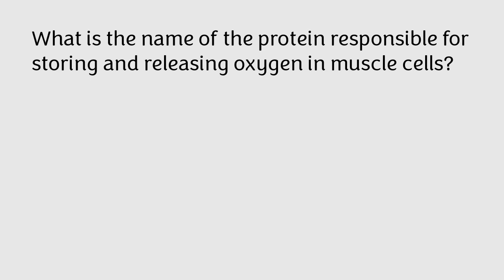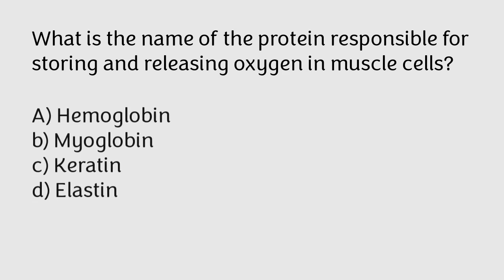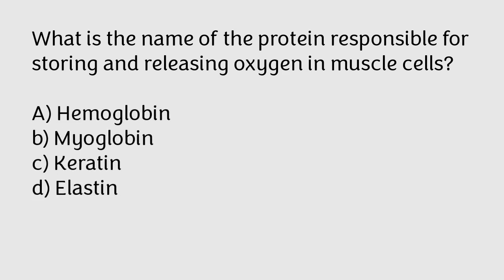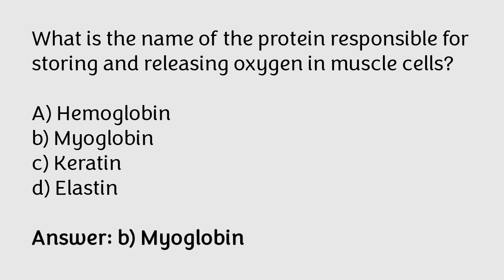What is the name of the protein responsible for storing and releasing oxygen in muscle cells? Hemoglobin, myoglobin, keratin, elastin. The correct answer is option B. Myoglobin is the name of the protein responsible for storing and releasing oxygen in muscle cells.